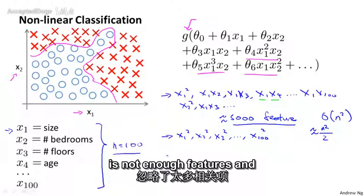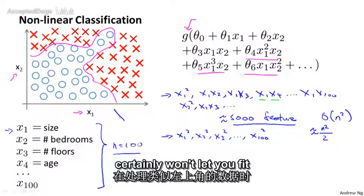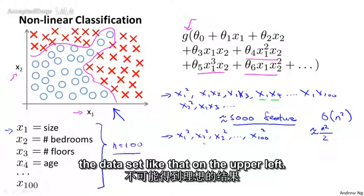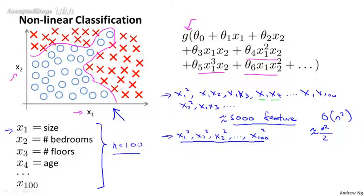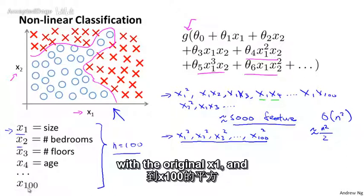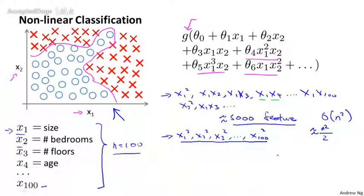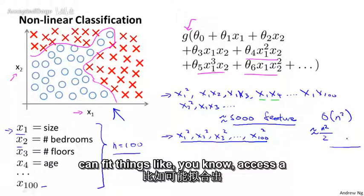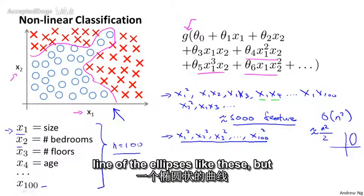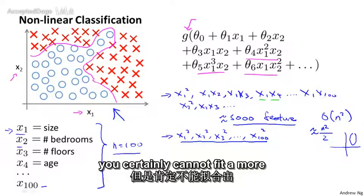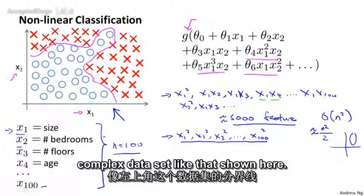But this is not enough features and certainly won't let you fit a data set like that on the upper left. In fact, if you include only these quadratic features together with the original x1 and so on up to x100 features, then you can't actually fit very interesting hypotheses. So you can fit things like axis aligned ellipses, but you certainly cannot fit a more complex data set like that shown here.